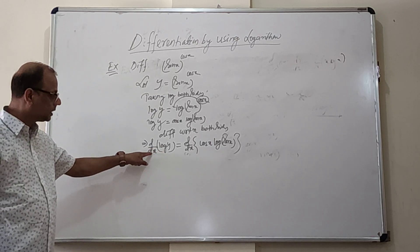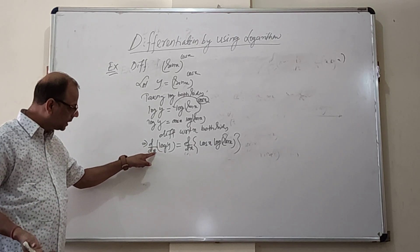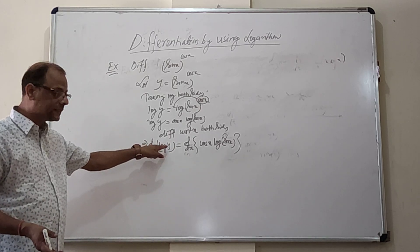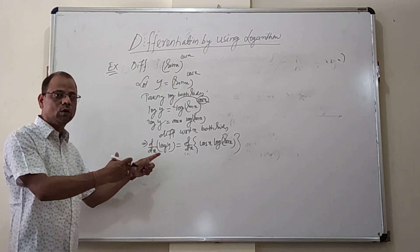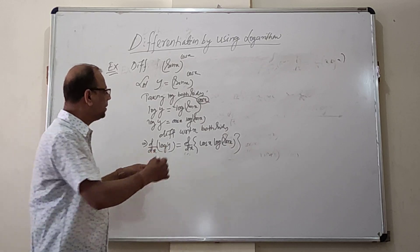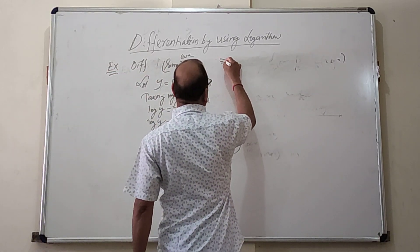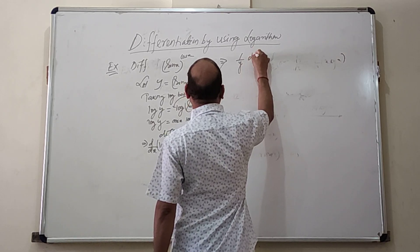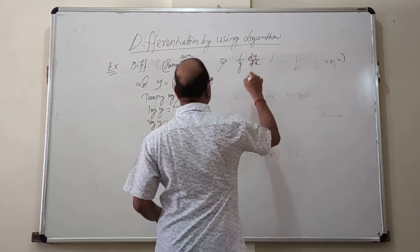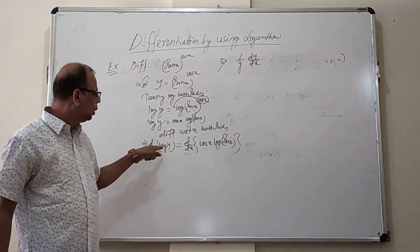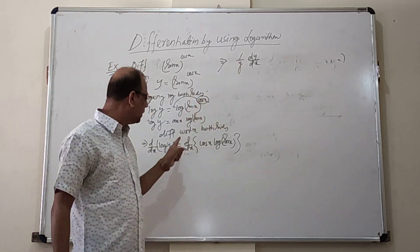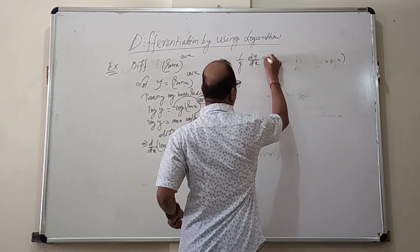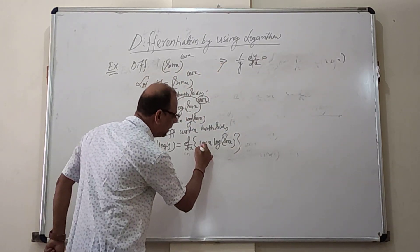On the left side, the derivative of log y with respect to y is 1/y, and then multiplied by dy/dx using the chain rule, giving (1/y)·dy/dx. On the right side we apply the product rule, where the first function is cos x and the second is log(sin x).